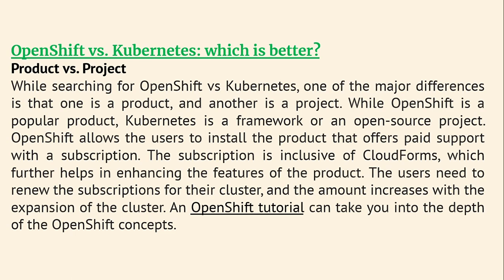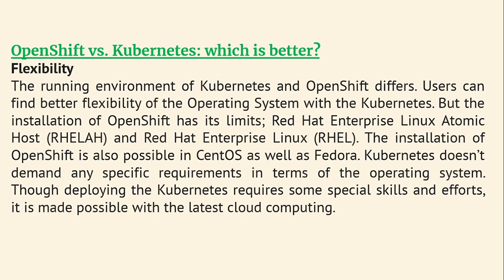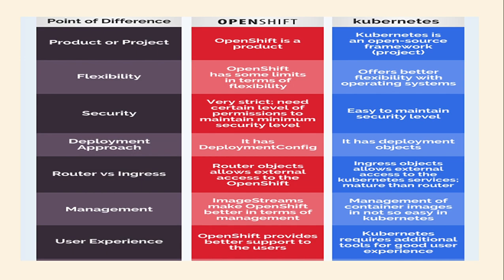OpenShift allows users to install the product with paid support via a subscription, which includes cloud management features that enhance the product. Users need to renew the subscription as their cluster expands. Regarding flexibility: users can find better OS flexibility with Kubernetes, while OpenShift installation is limited to Red Hat Enterprise Linux, RHEL Atomic Host, CentOS, and Fedora. Kubernetes does not demand any specific operating system requirement, though deploying on Kubernetes requires special skills and effort, made possible with modern cloud computing.